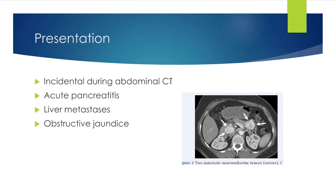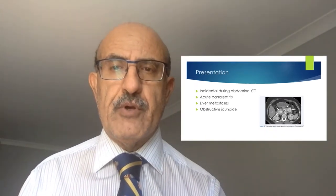On CT scan, this patient has two neuroendocrine tumors — one in the head of the pancreas and one in the tail. The majority arise in the body and tail because the islets of Langerhans are more abundant there. They are typically hyper-enhancing in the arterial phase, which is pathognomonic for the diagnosis of neuroendocrine tumors.